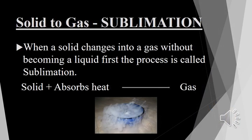The process of sublimation is very interesting. When a solid changes into a gas without becoming a liquid first, the process is called sublimation. In this process, heat is absorbed by the solid and the solid directly converts into a gas. It happens to a few substances. One of the rare examples is carbon dioxide, which does not change into a liquid but directly converts into a gas on heating.